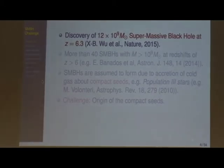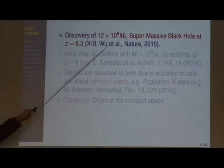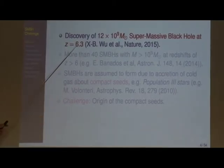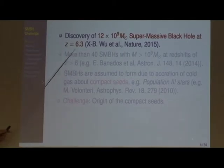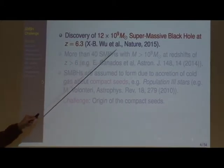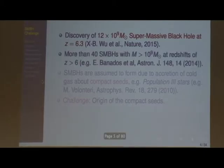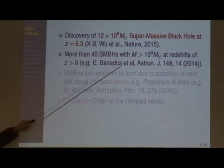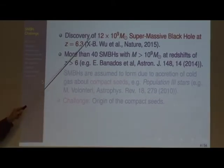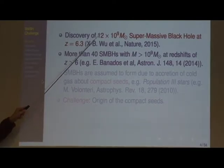There's a recent Nature article, about 10 days to 2 weeks ago, on the discovery of a 12 billion solar mass supermassive black hole at a redshift of 6.3 — quite a high redshift. For comparison, the main epoch of star formation is at redshifts smaller than 8. There are already more than 40 supermassive black holes with mass greater than 10⁹ solar masses at redshift 6. This is like the tip of an iceberg, but there's a big iceberg there.